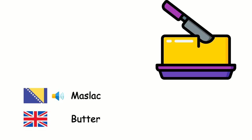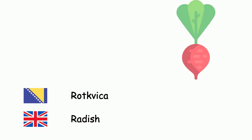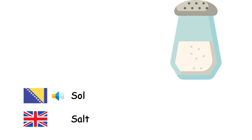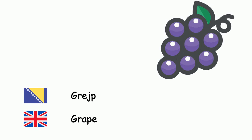Maslac. Rotkvica. Sol. Grožđe. — Butter. Radish. Salt. Grape.